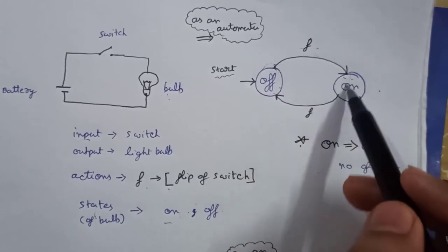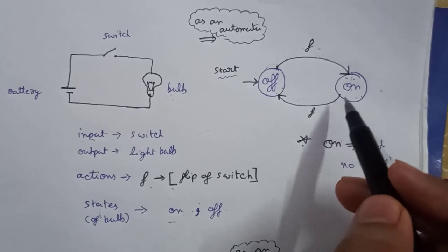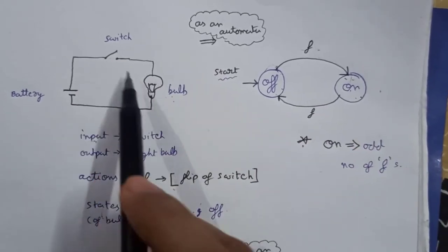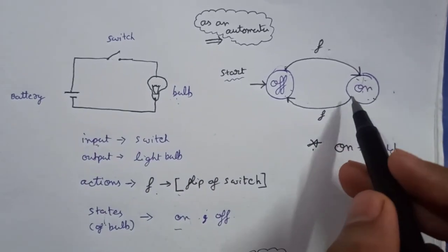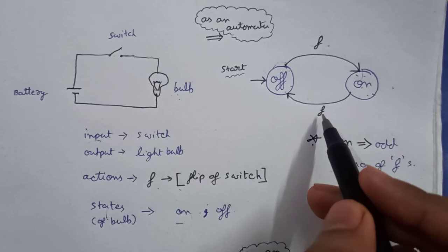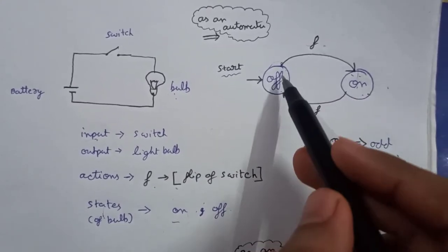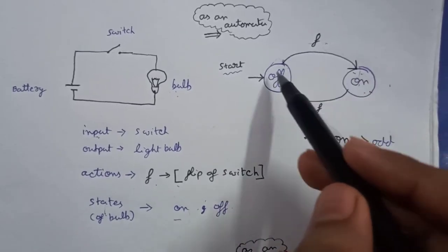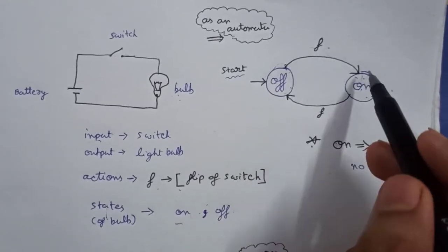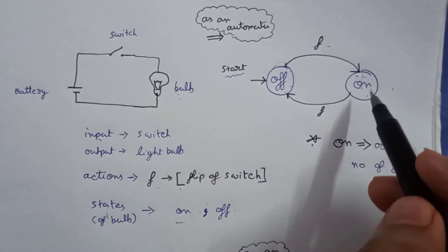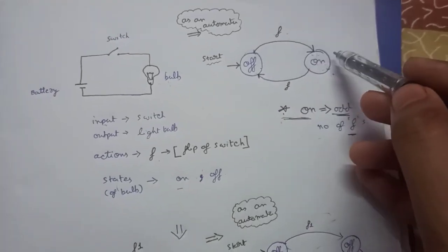So the bulb was at off state in the beginning; we perform action f, then the bulb goes to on state. Again, when the bulb is at on state and we flip the switch, it will go to off state. If we give f again, it will be on again. So flipping the switch once turns it on, flipping twice turns it off.